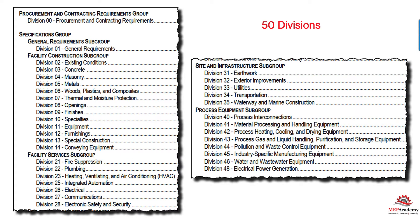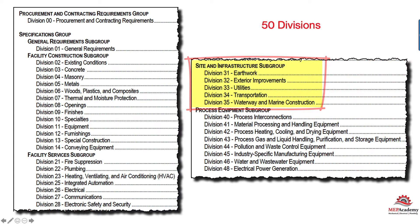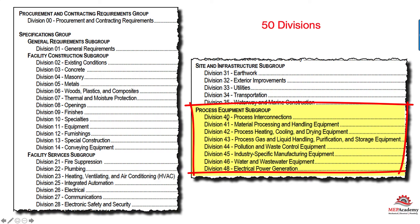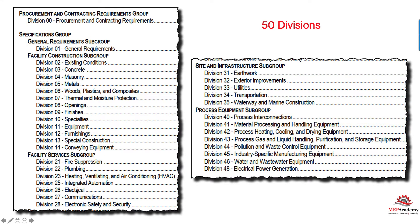If you do additional work, you may do Site Work, which would be in Divisions 31 to 35. Or if you do Process Work, Divisions 40 to 48, which covers Process Heating, Cooling, and Drying equipment, or Water and Wastewater equipment. Depending on what your plumbing, HVAC, or electrical company does, you'll have other divisions. But your main MEP categories are Division 22, 23, and 26.